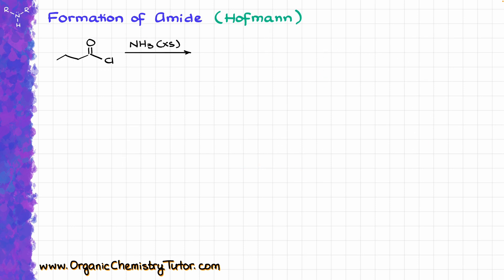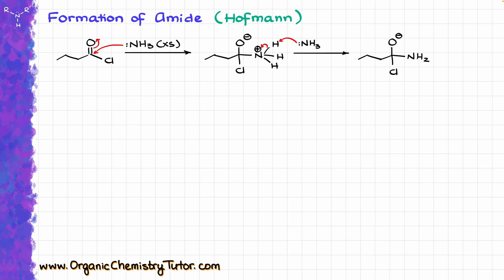When we have our acid chloride, we can move on to the next step. In the Hofmann pathway, the first part of the reaction is the formation of the amide, which is just a typical acyl substitution reaction. Ammonia comes in, attacks our carbonyl, giving us a tetrahedral intermediate. Then we bring in a second equivalent of ammonia — that's why we need an excess — because one ammonia acts as a base. Chlorine then leaves our molecule, giving us our amide.